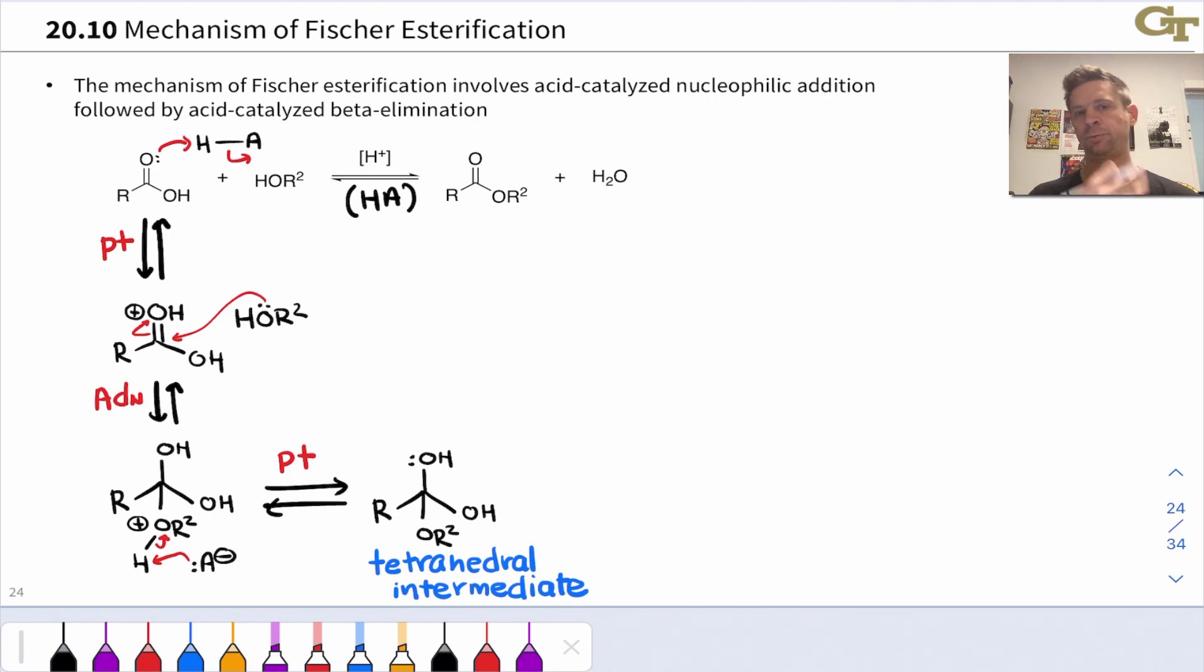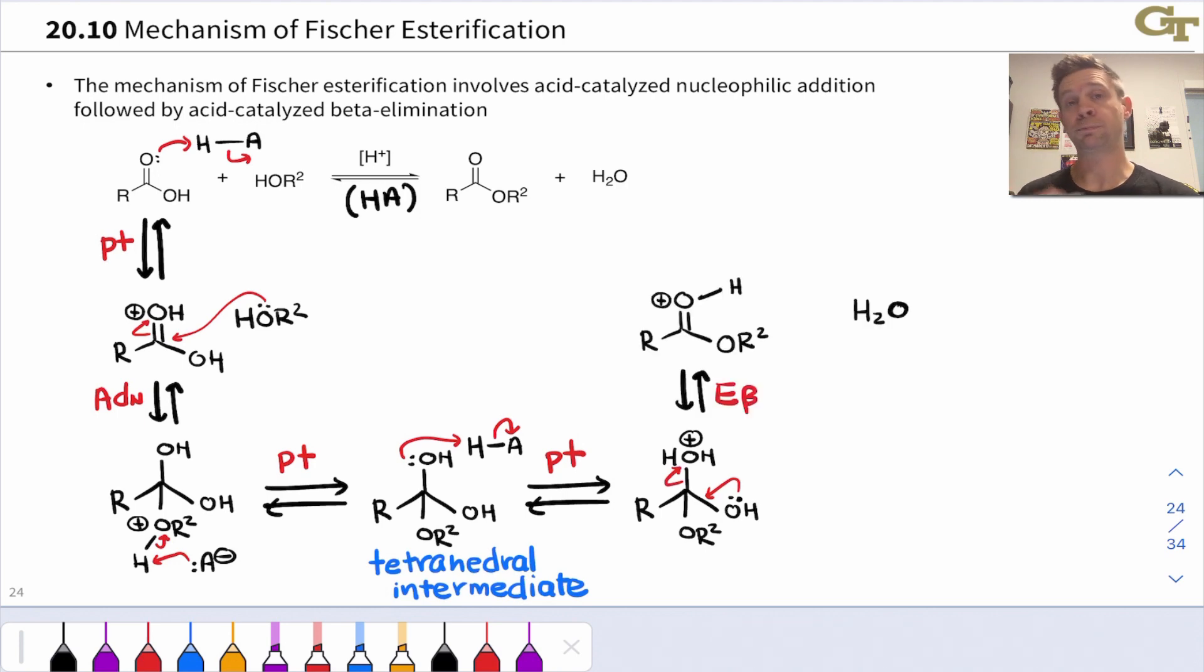Everything to this point is reversible because we haven't really moved positive charge from a less stable to a more stable location. Everything is reversible, but we're driving it by using an excess of the alcohol. At this point, one of the OH groups gets protonated. This sets up a water leaving group in that tetrahedral intermediate and a beta elimination step occurs to give a protonated ester intermediate. Deprotonation of that ester gives the neutral product. Notice a molecule of water was given off in this beta elimination step.